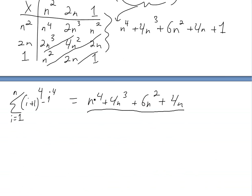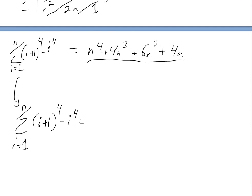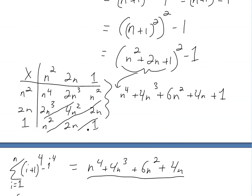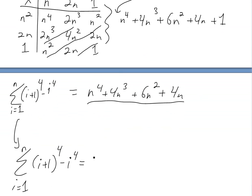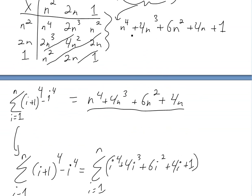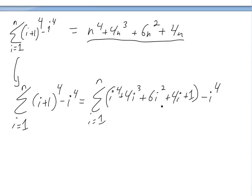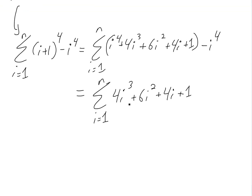Now I'm going to show a different method by initially breaking this down. If we foil out the sum, this is exactly the same as (n plus 1) to the 4 but now we have an i there. So sigma from i equals 1 to n, foiling out (i plus 1) to the power of 4 minus i to the 4, and this would cancel, and you're left with 4i cubed, 6i squared, 4i plus 1.